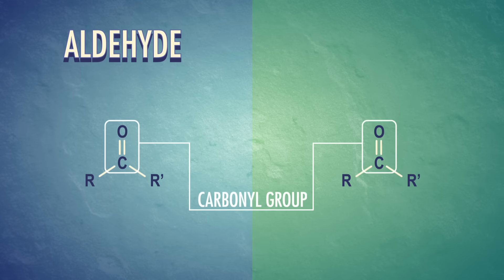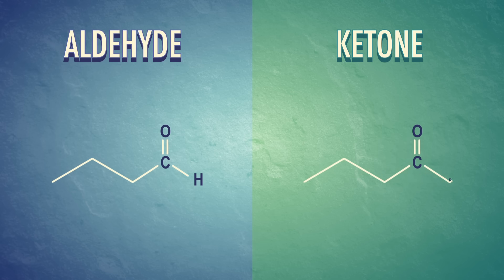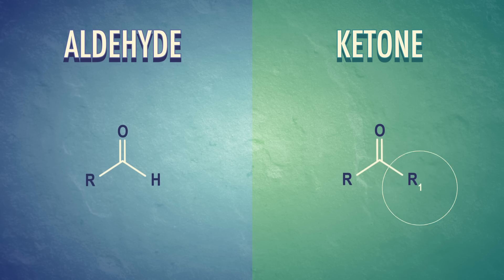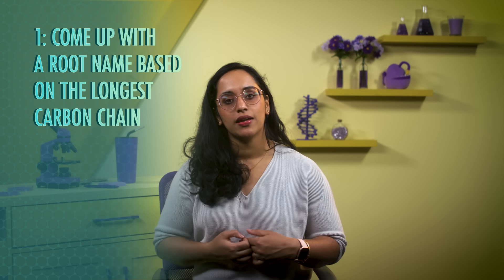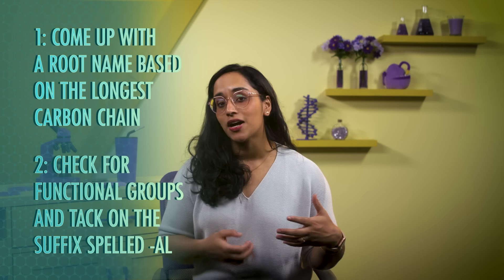Notice that we can add an apostrophe or a number superscript to the R groups when drawing a ketone or any structure — this lets us communicate that these groups might not be the same thing. To name organic compounds with an aldehyde functional group using IUPAC rules: Step 1, come up with a root name based on the longest carbon chain. Step 2, check for functional groups and add the suffix -al. Aldehydes have priority over alcohols, and therefore over double bonds, triple bonds, and any substituents we've seen so far. By definition, this carbonyl with a hydrogen group has to be at the start of a carbon chain — if the group is in the middle, it's a ketone, not an aldehyde — so we don't use numbers before the -al suffix. For example, an aldehyde on a 4-carbon chain with only single bonds would be named butanal.